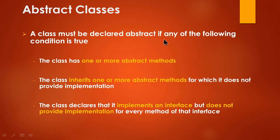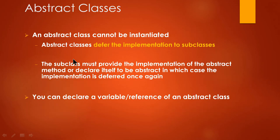A class must be declared abstract if any of the following conditions is true: the class has one or more abstract methods; a class inherits one or more abstract methods; or the class declares that it implements an interface but does not provide implementation. An abstract class cannot be instantiated — that means you cannot create an object out of an abstract class. The subclass must provide implementation of the abstract method, or declare itself to be abstract.